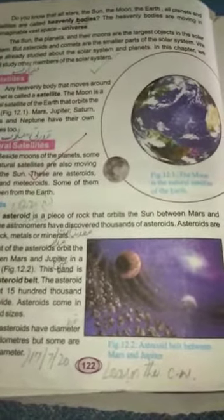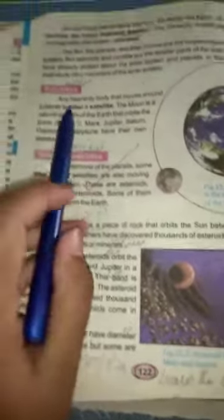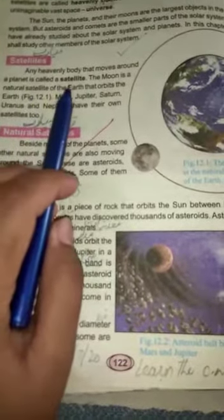The universe is a very vast place. We don't know many objects about the orbit of the solar system. The first topic is satellites. A body that moves around a planet is called a satellite.